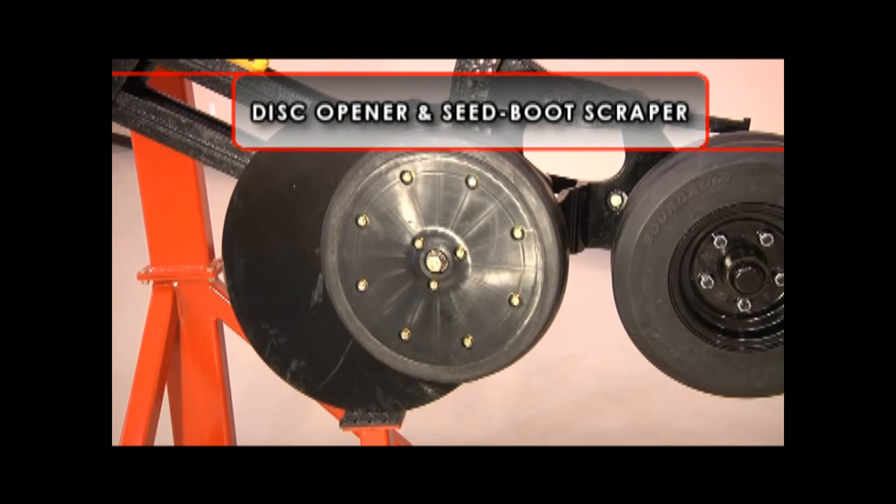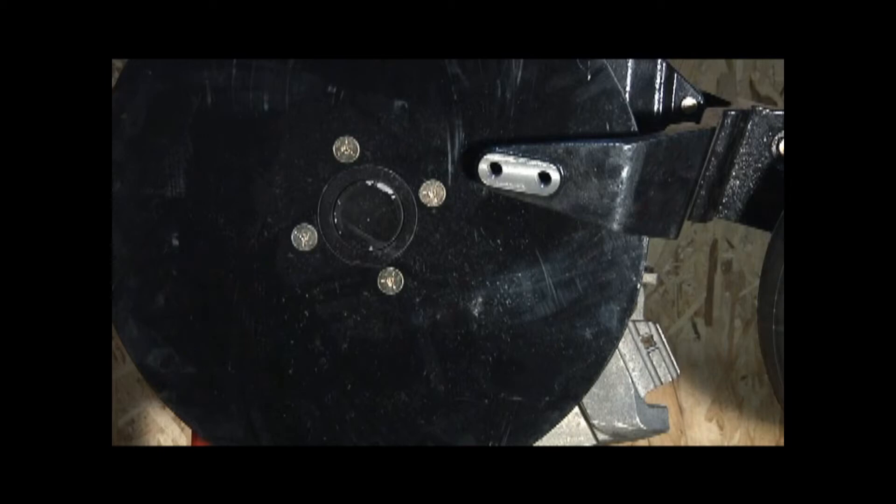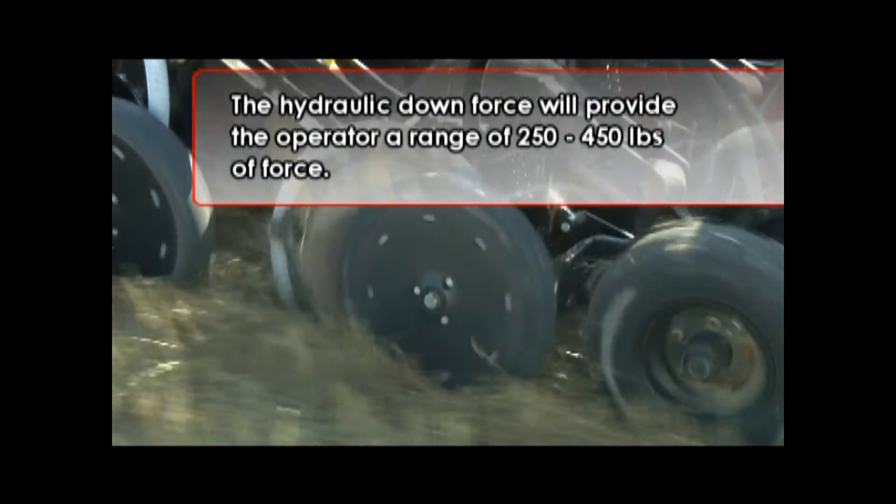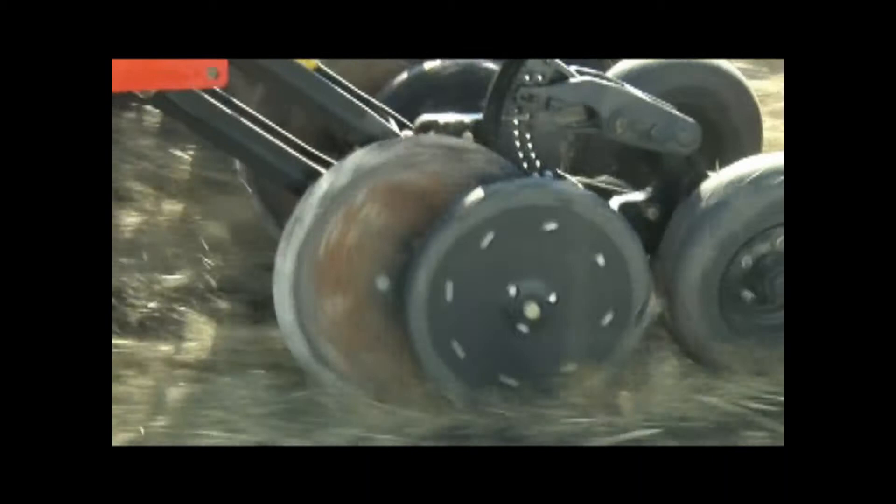The parallel coulter walking arm features a 20.5-inch diameter coulter disc that will allow 4 inches of wear in diameter before needing replacement. The material used in the fabrication of the discs provides extended service in the field. The hydraulic downforce will provide the operator a range of 250 to 450 pounds of force.